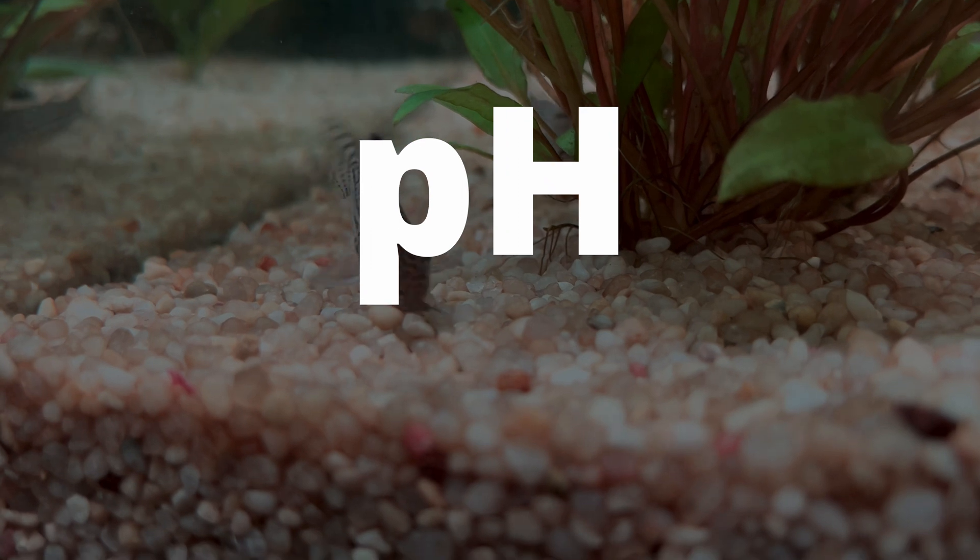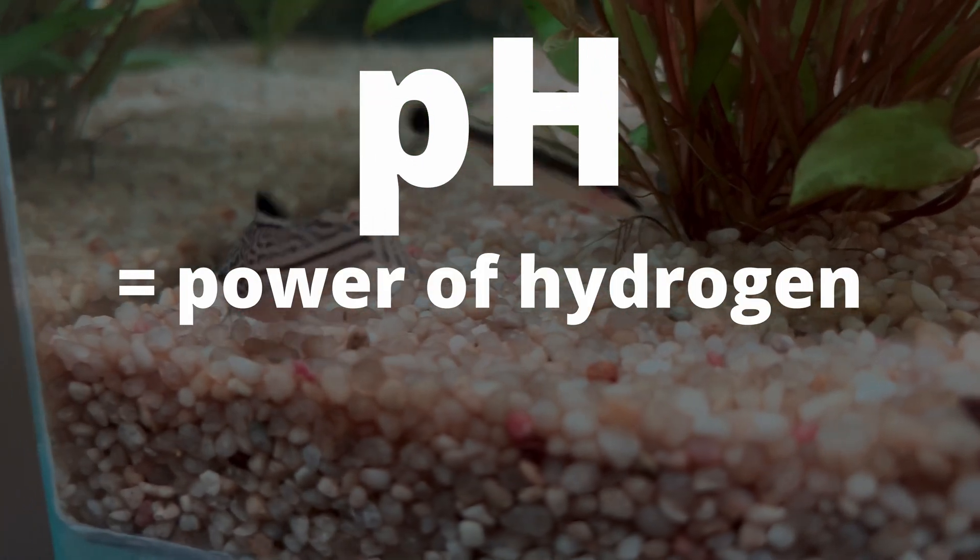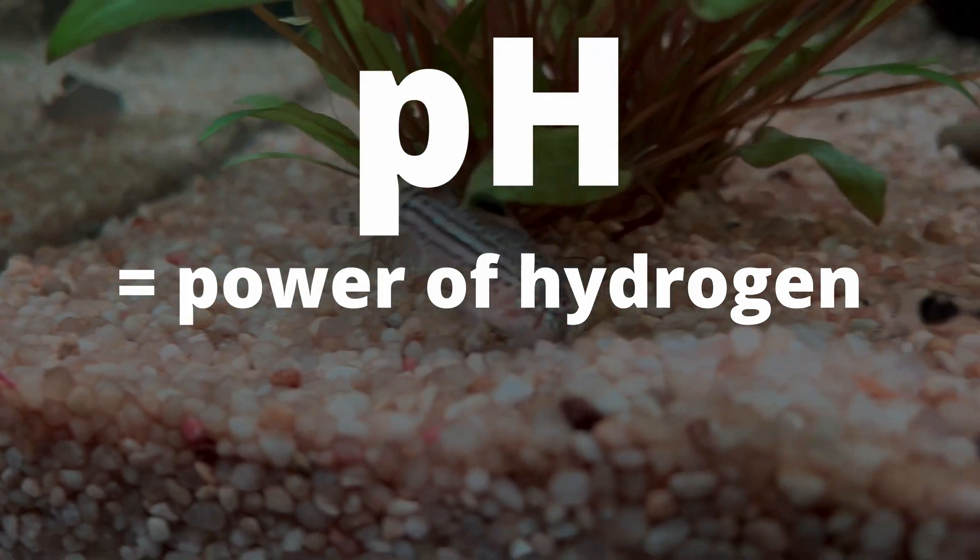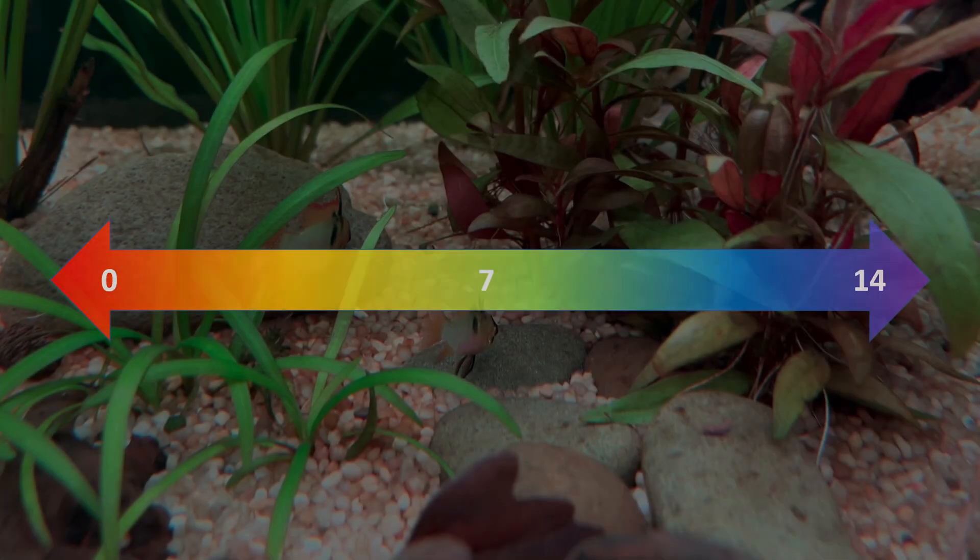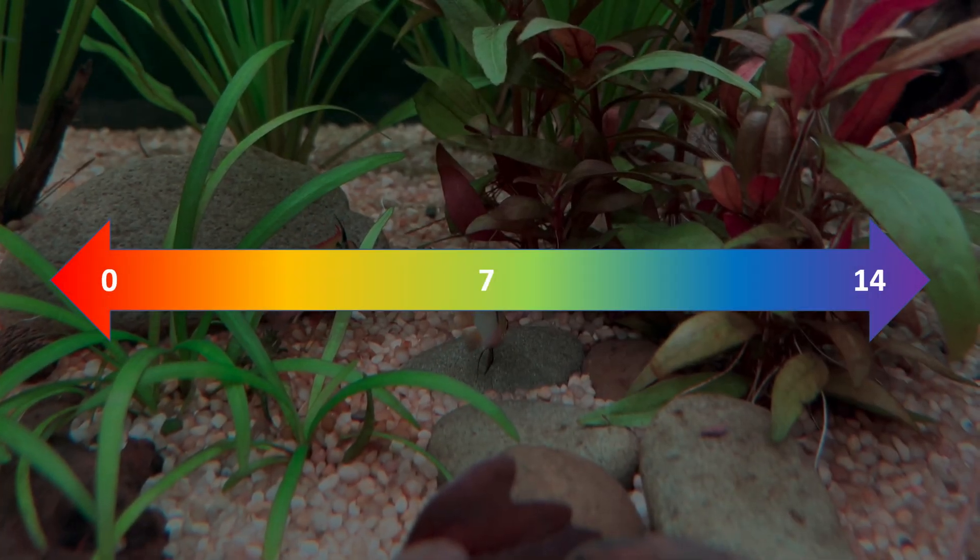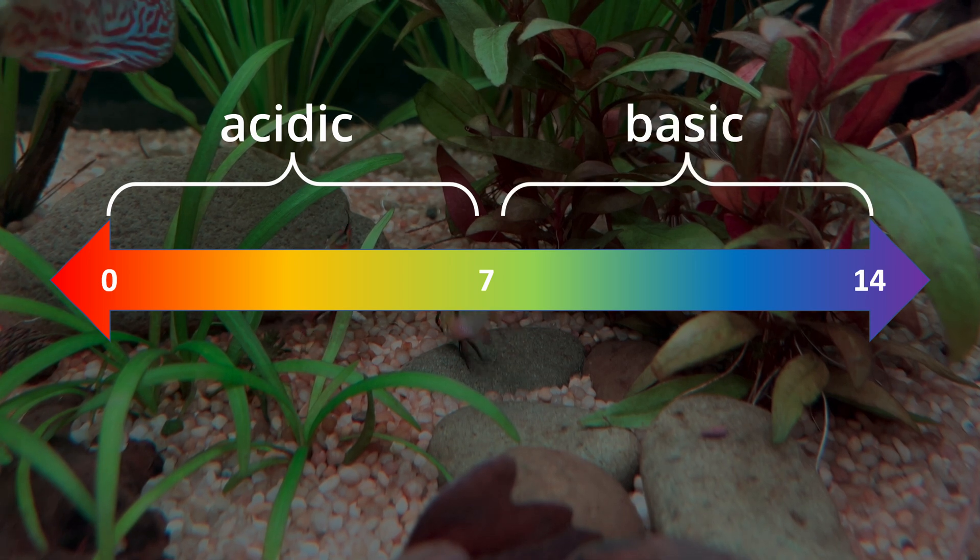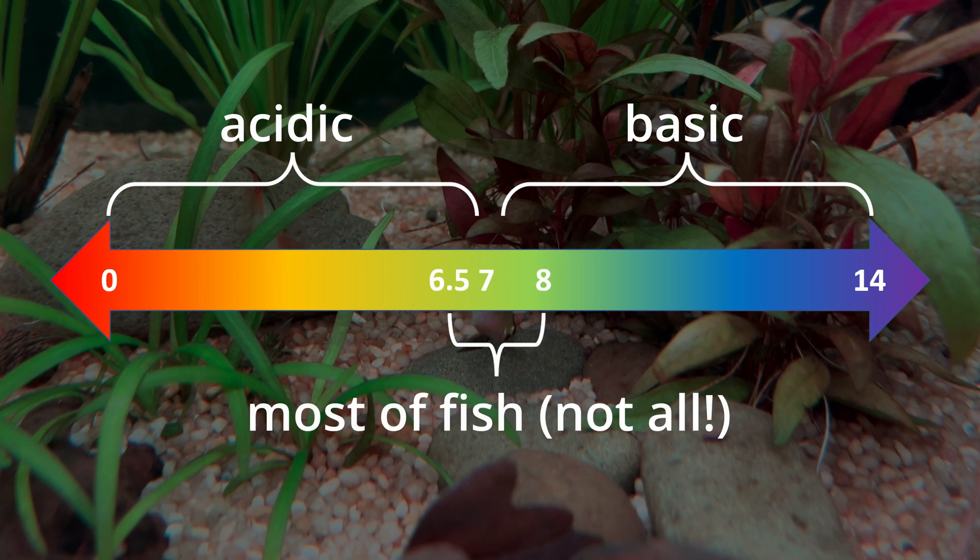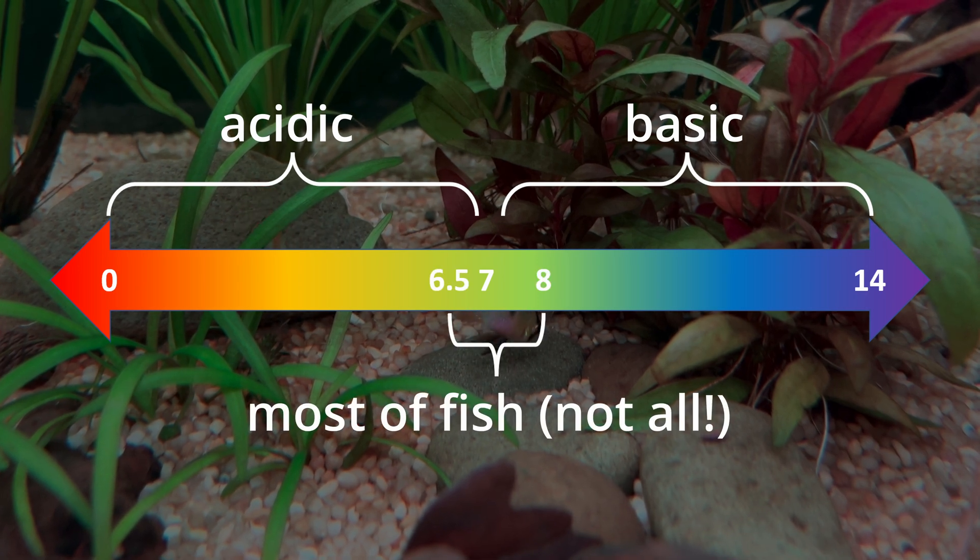We're gonna start from pH. So pH stands for power of hydrogen and it measures amount of hydrogen ions inside any liquid. In other words, it tells you if your water is more acidic or basic. In our hobby, vast majority of fish are happy in pH between 6.5 to 8.